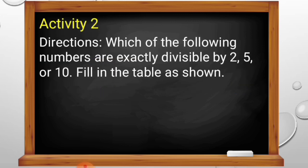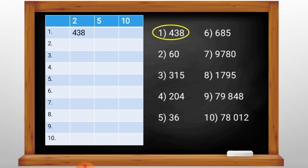Now let us do Activity 2. Which of the following numbers are exactly divisible by 2, 5, or 10? Fill in the table as shown. Number 1 is 438. Is 438 divisible by 2? Yes, so we put 438 under 2. Is 438 divisible by 5? No, because the last digit of 438 is 8.